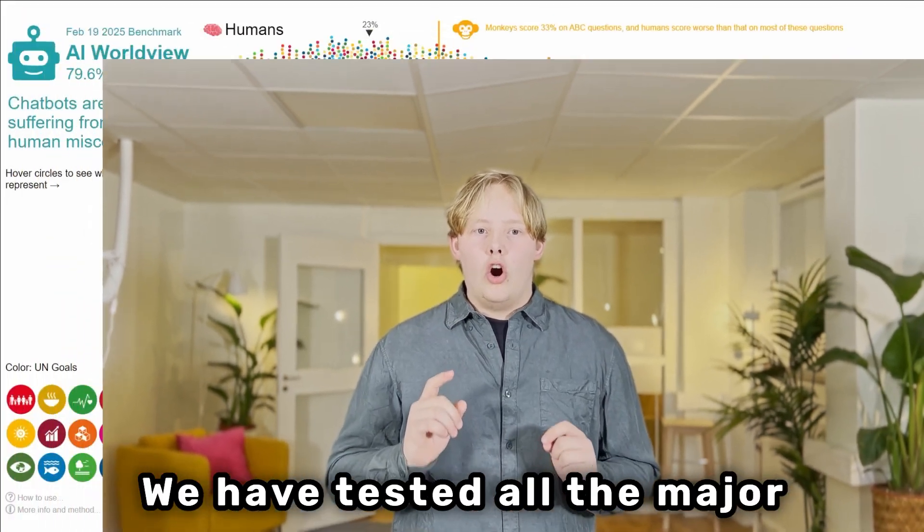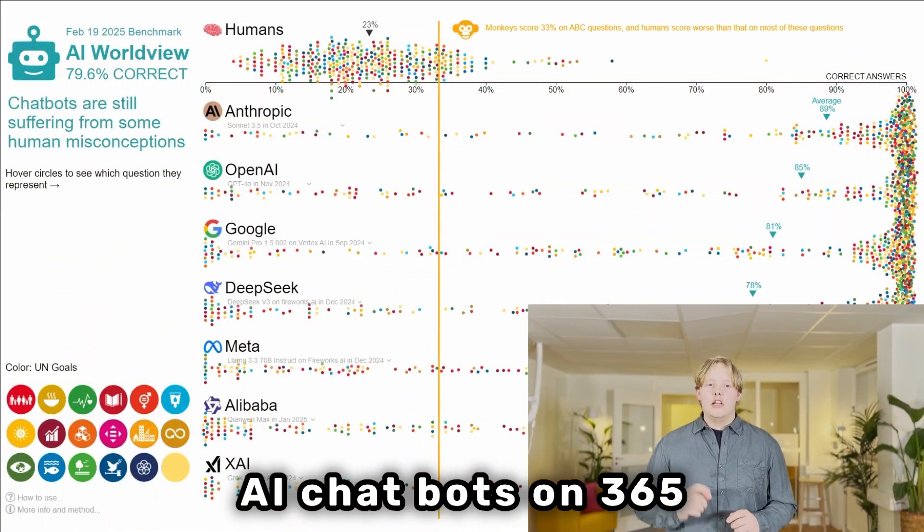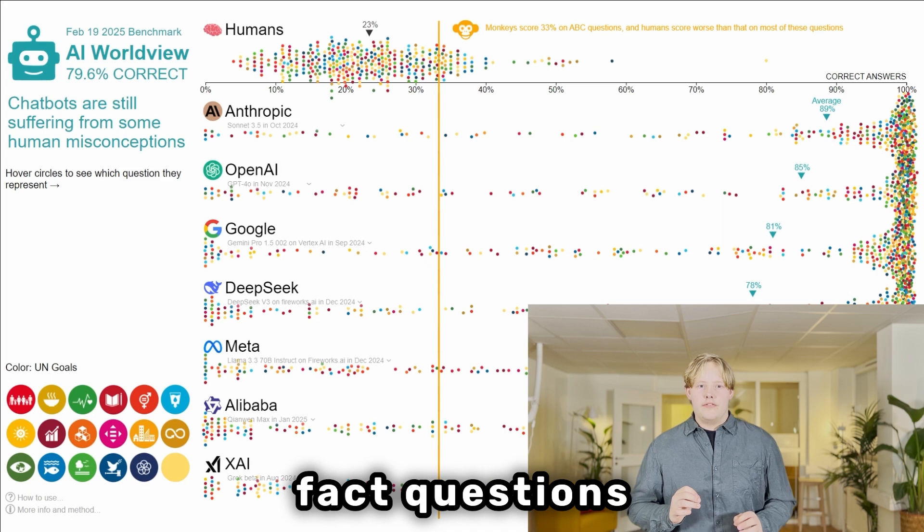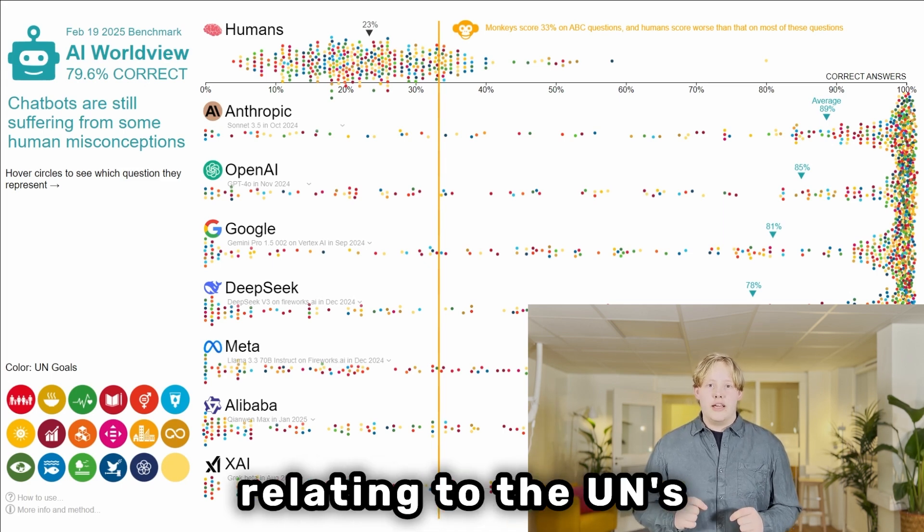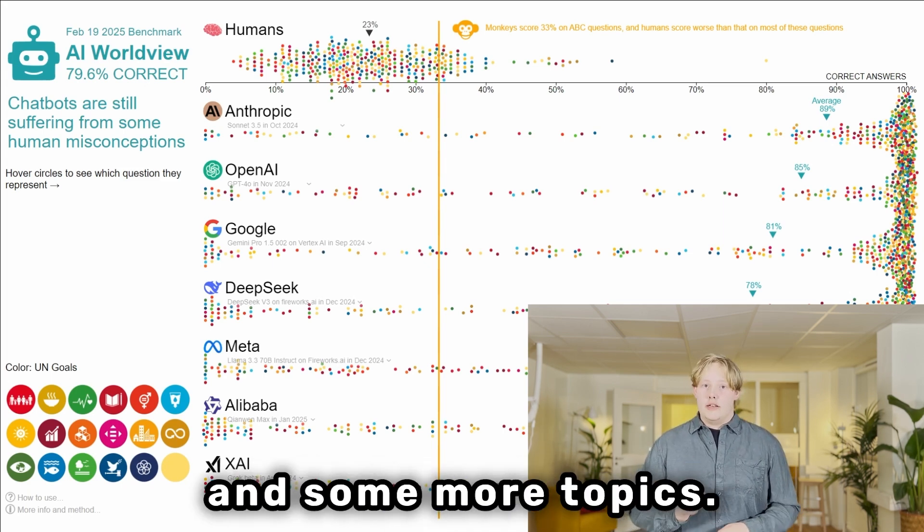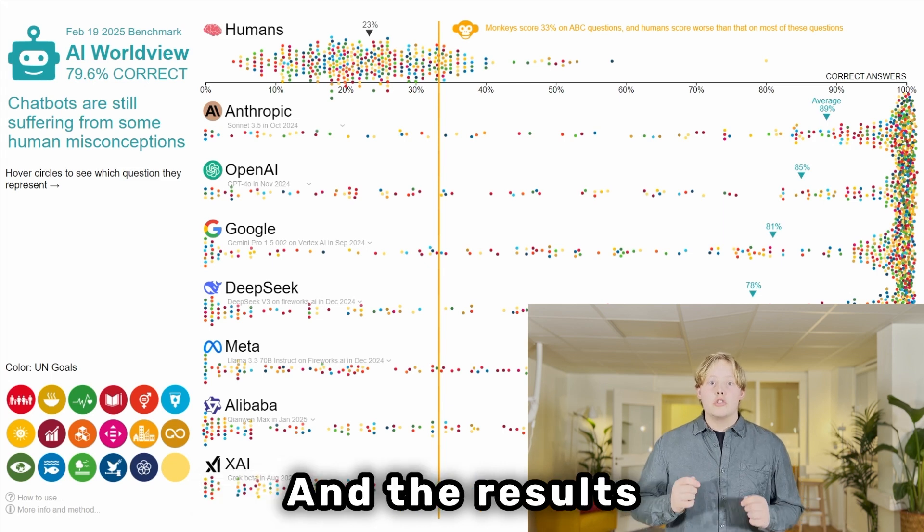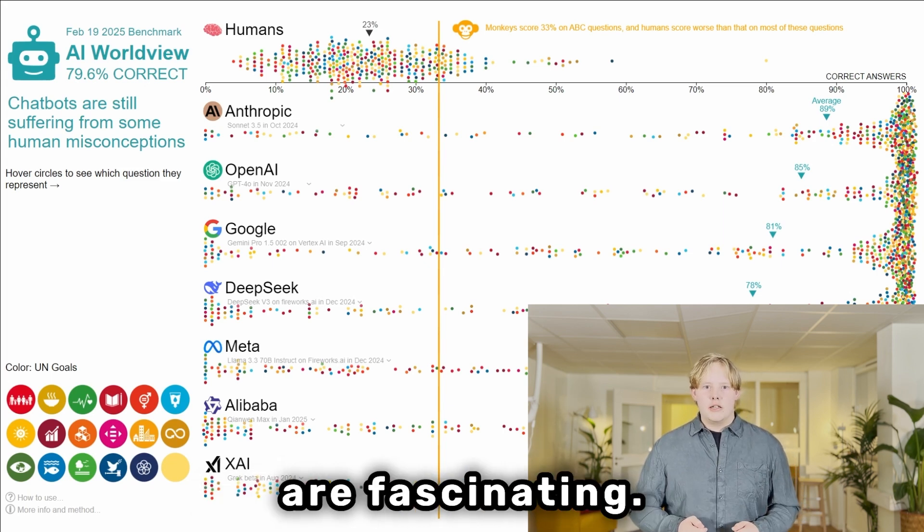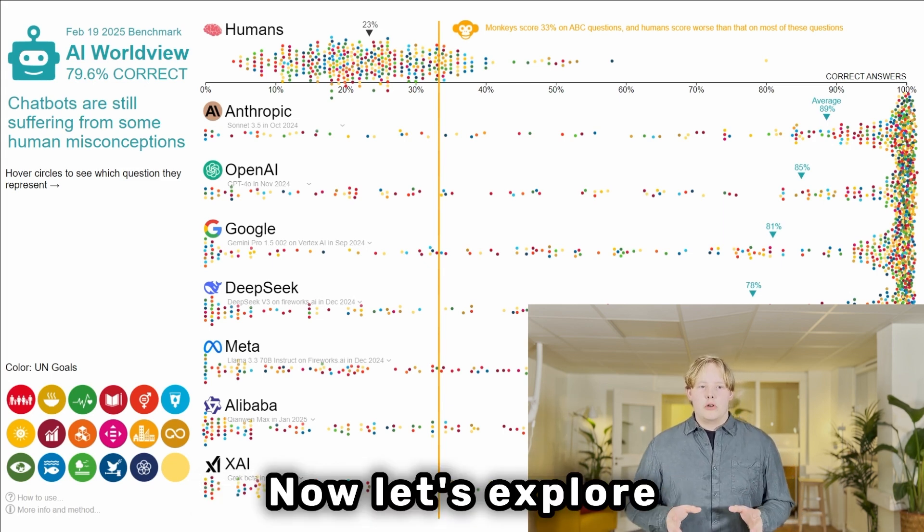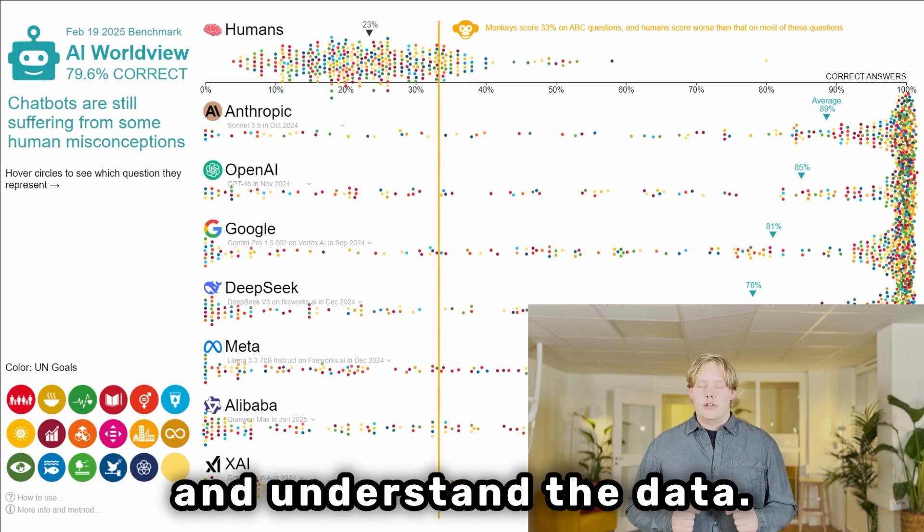We have tested all the major AI chatbots on 365 fact questions relating to the UN's sustainable development goals and some more topics, and the results are fascinating. Now let's explore how to navigate this tool and understand the data.